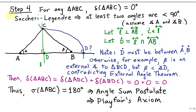We have arrived at the final step: step four. We'll show that for any triangle ABC, the angle deficit is zero degrees — its angle sum is 180. By the Saccheri-Legendre theorem, which holds in neutral geometry, the angle sum of triangle ABC is less than or equal to 180 degrees. Therefore at least two of the angles must be acute — less than 90 degrees. If this were not true and two angles were 90 degrees or greater, they added to the third would exceed 180 degrees, contradicting Saccheri-Legendre. So without loss of generality, let the two acute angles be angles A and B, marked as alpha and beta.